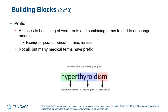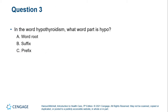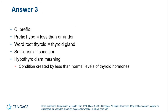The prefix attaches to the beginning of the word root and combining forms to add to or change the meaning. Many medical terms have prefixes, but not all medical terms do. Here you see 'hyperthyroidism,' and 'hyper,' meaning higher than normal, is the prefix. In the word 'hypothyroidism,' what part is 'hypo'? It is the prefix.